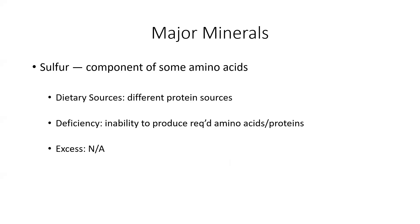Sulfur — this one we probably haven't heard of quite as much. It is a component of some amino acids; not all amino acids, but there are a few that contain sulfur. We get this from pretty much anywhere you can get protein — meats, certain dairy products that contain a lot of protein. If you don't have enough sulfur, you won't be able to produce enough of those amino acids, which means you won't be able to produce the proteins made up of those amino acids, leading to certain protein deficiencies. There isn't really a scenario where you can have too much sulfur in your body.